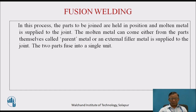Welding can be obtained by two processes. One is fusion welding, in which the parts to be joined are held in position and molten metal is supplied to the joint. The molten metal can come either from the parts themselves, called the parent metal, or it can be supplied by a filler metal. After solidification of the joint, the two parts fuse into a single unit.